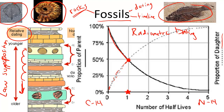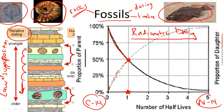So remember, in summary: the Law of Superposition states that the older the fossil, the lower down in the sedimentary rock layers it will be. And radiometric dating uses isotopes, commonly carbon-14 and nitrogen-14, to determine the age of rock based on their proportions in the rock.